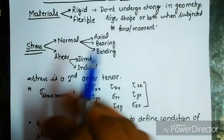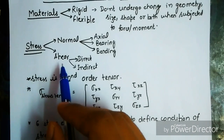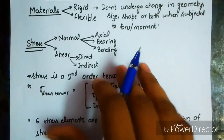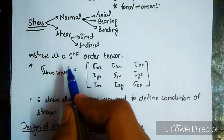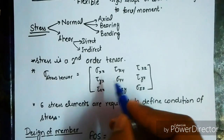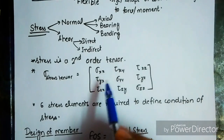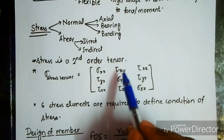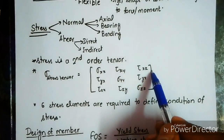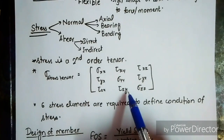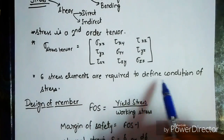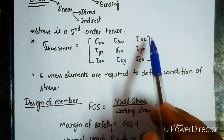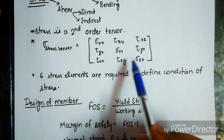Stress is of two types: normal stress or shear stress. Normal stresses include axial stress, bearing stress, and bending stress. Shear stress includes direct and indirect stress. Stress is a second-order tensor quantity, represented by a matrix with direct stresses sigma-xx, sigma-yy, sigma-zz, and shear stresses tau-xy, tau-xz, tau-yz. Six stress elements are required to define the condition of stress: sigma-xx, sigma-yy, sigma-zz, tau-xy, tau-xz, and tau-yz. These shear stresses have their complementary stress on the lower triangle.